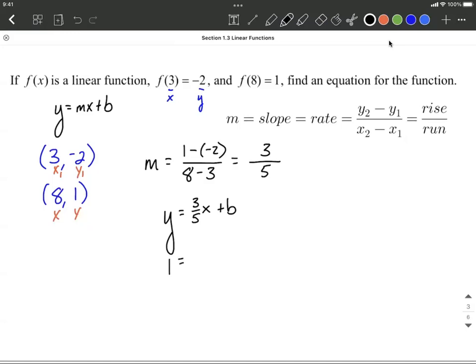Y value of 1, x value of 8. And now everything's numbers except for the b. So let's do a little bit of work and try to solve for b. So the first thing I'm going to do is combine the 3 fifths and the 8. These are being multiplied, so I can visualize the 8 as being in the numerator. I can always put that over 1. We would multiply our numerators. 3 times 8 makes 24. And multiply our denominators. 5 times 1 makes 5.